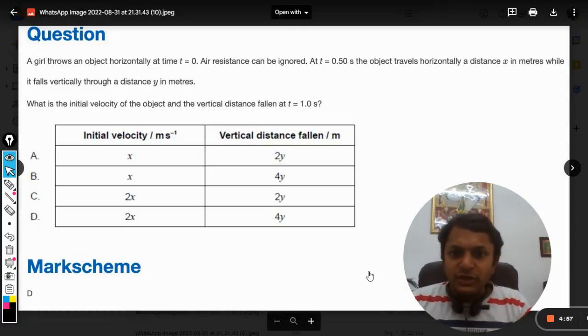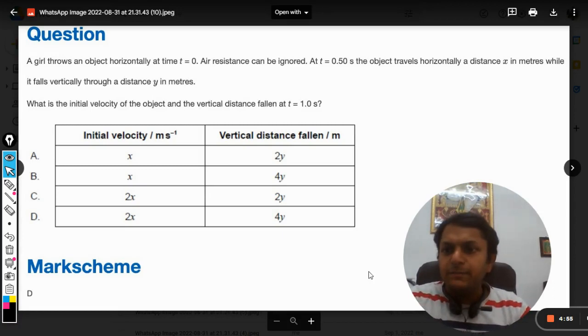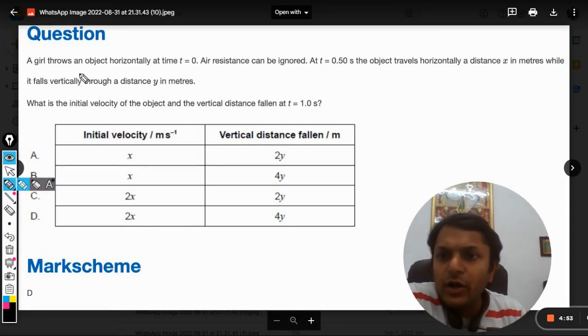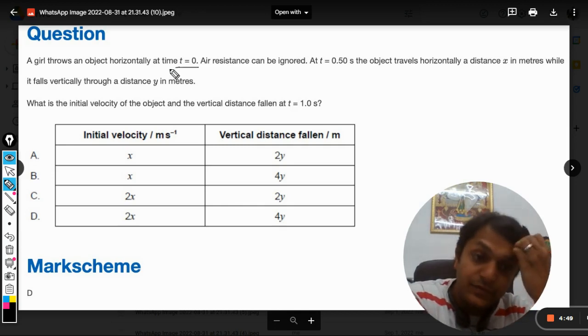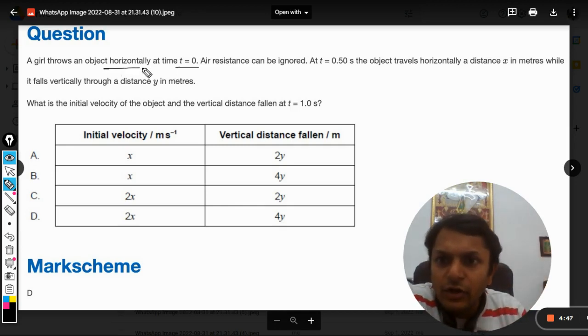Okay, so this question seems to be quite interesting. Let us see - a girl throws an object horizontally at time t equals zero. It is a horizontal motion, so we are talking about horizontal projectile.